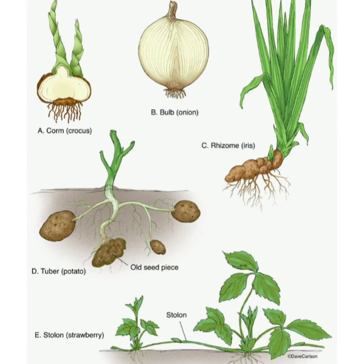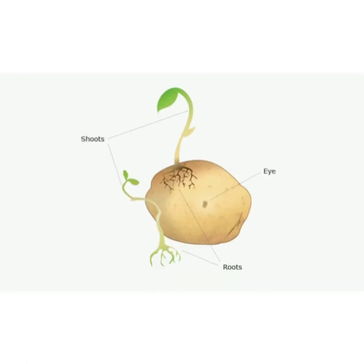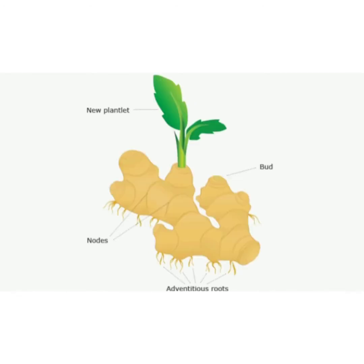Some plants like potato, onion, garlic and ginger reproduce with the help of their stems. Onion and garlic can grow from a bulb. Potato and ginger have small buds that grow on their surface, and each bud can grow into a new plant.